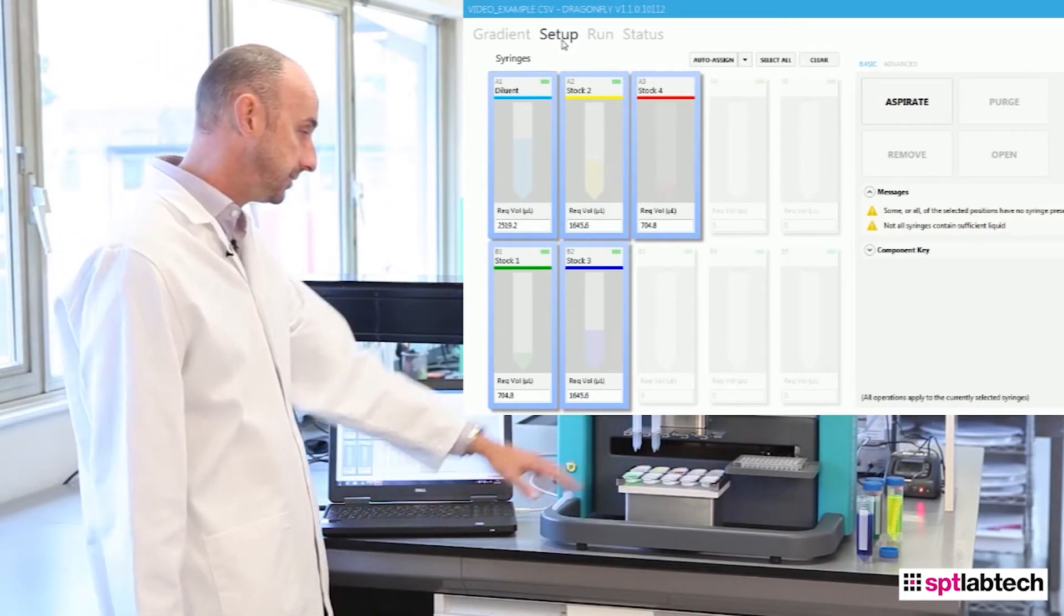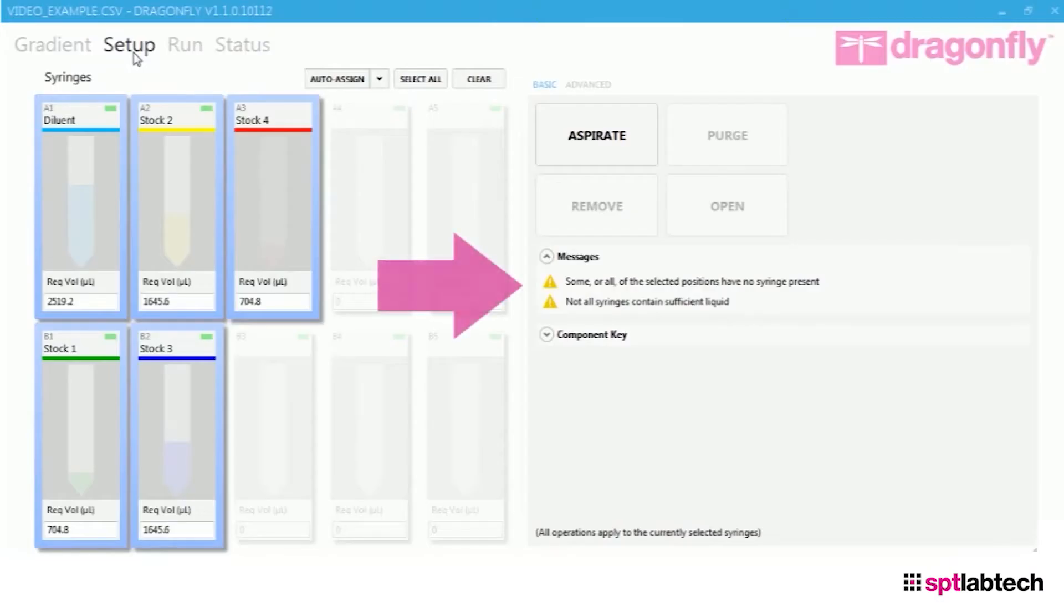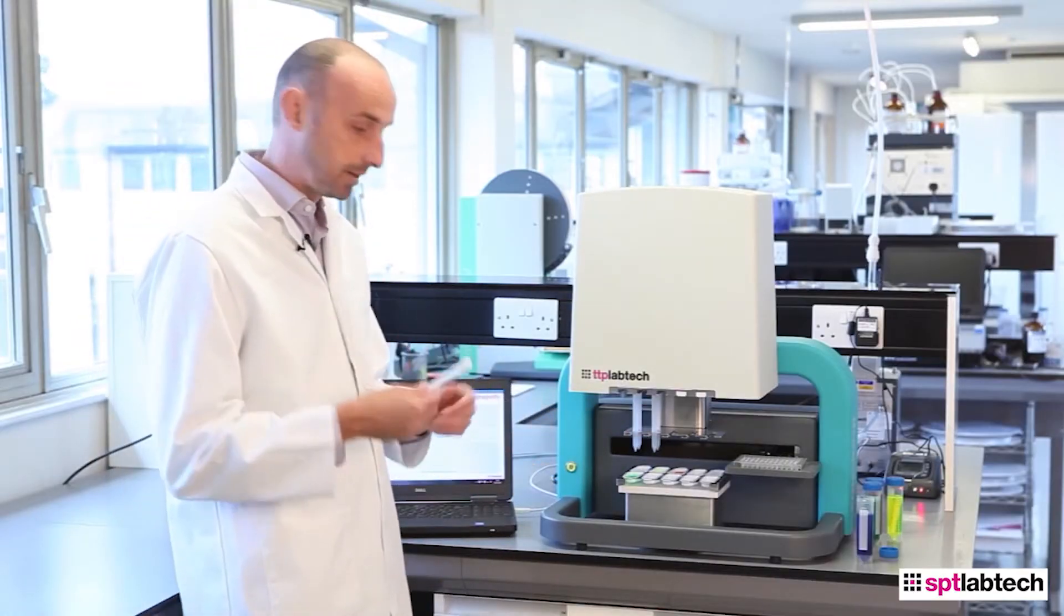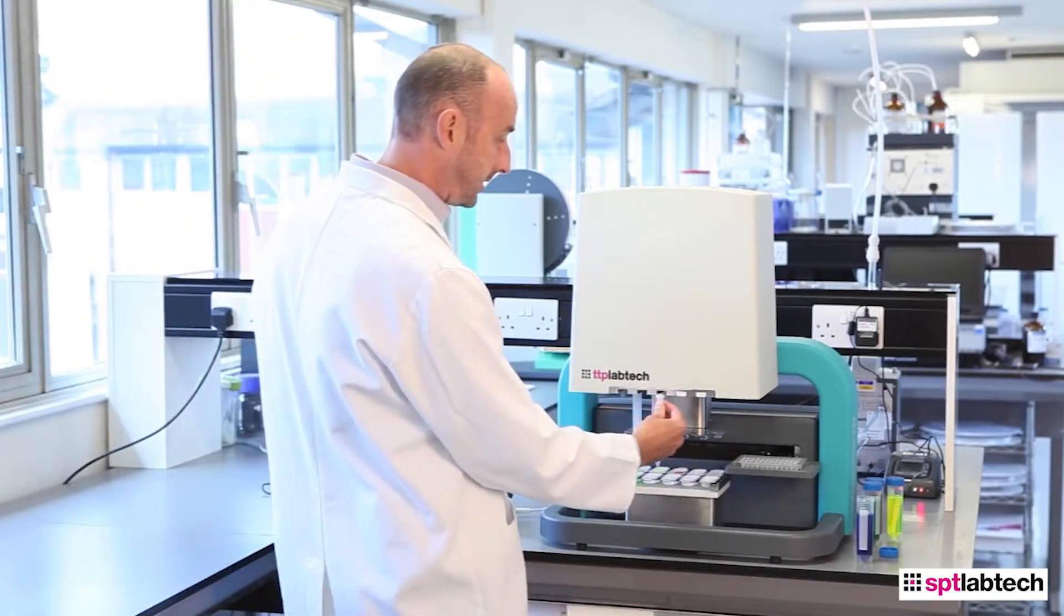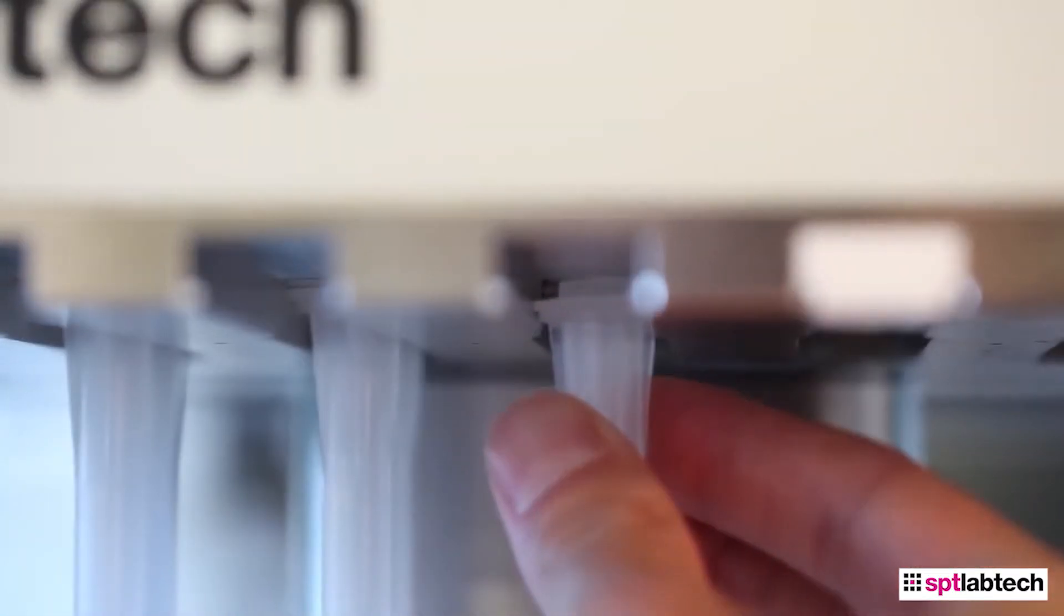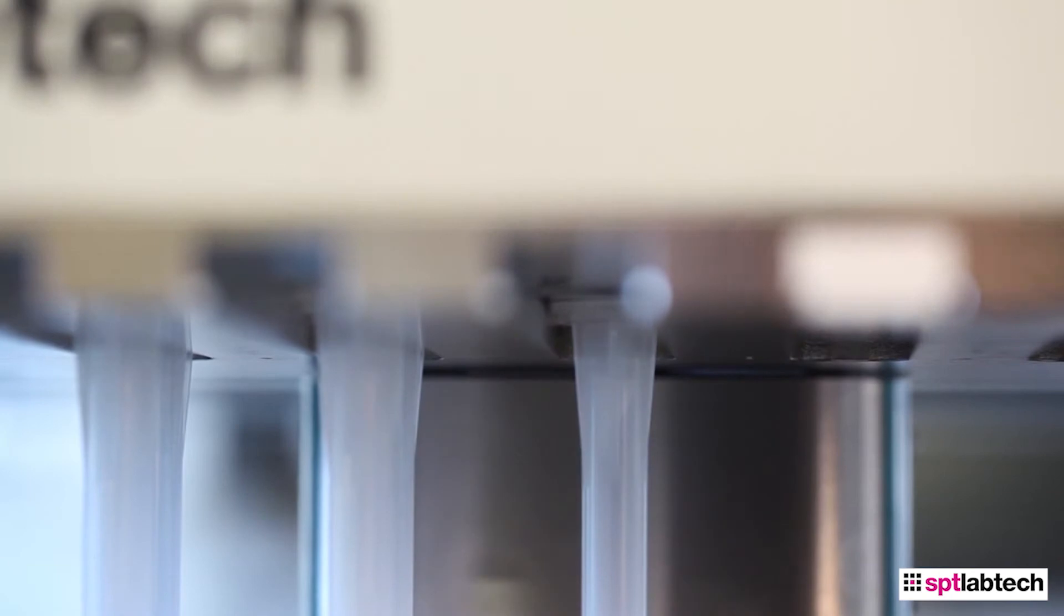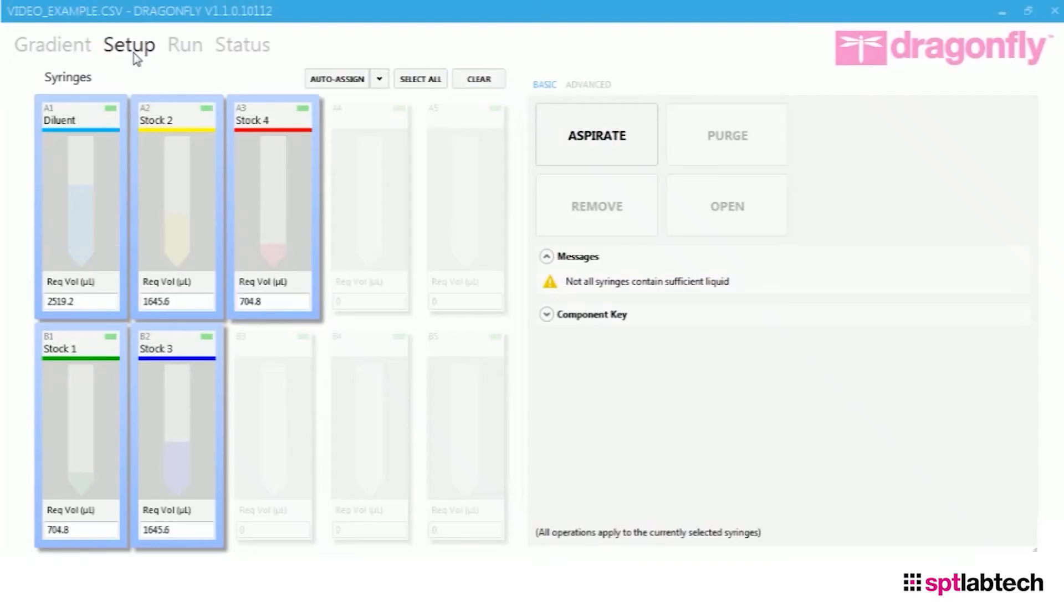The first thing I notice is that I don't have sufficient tips in the machine. I need five and I only have four. So I simply insert another disposable tip by sliding it in the front of the machine to the point where it engages with a quarter turn. I know I've been successful with this because there's a checkbox in the top right which tells me the tip's engaged correctly.